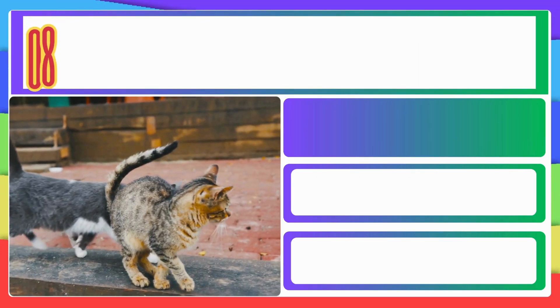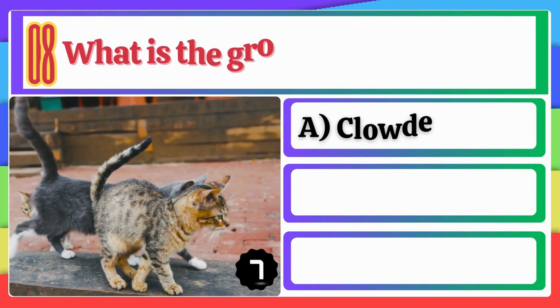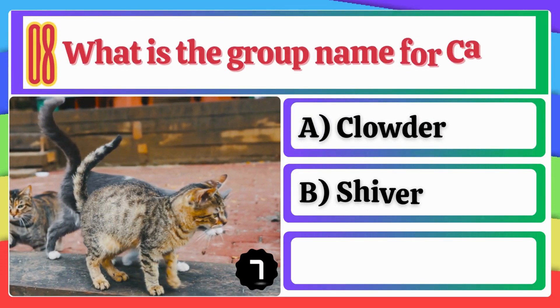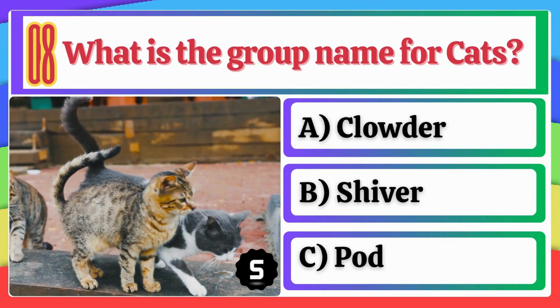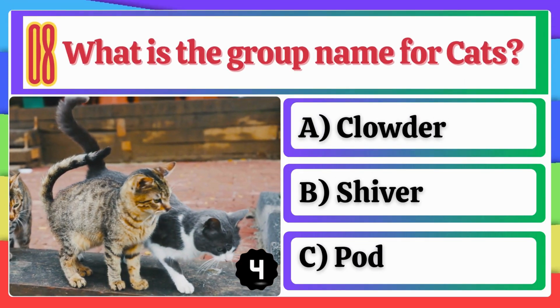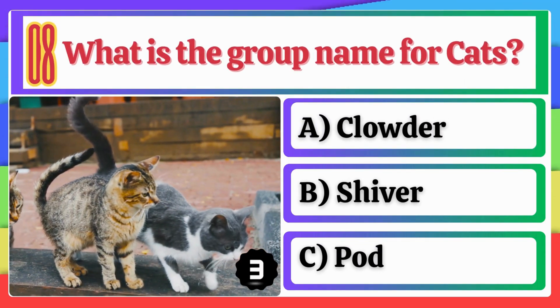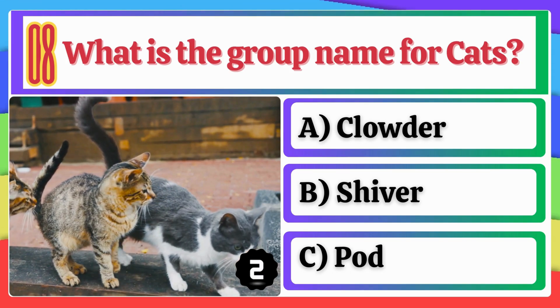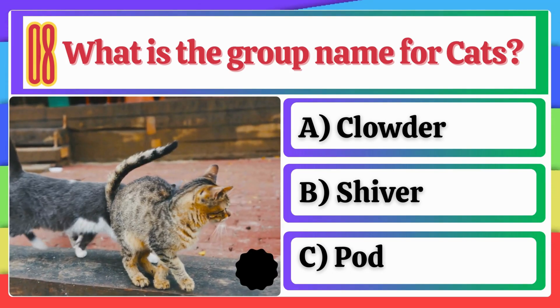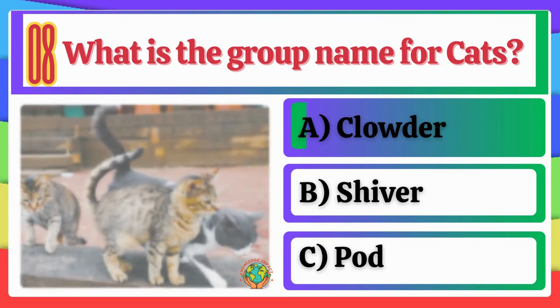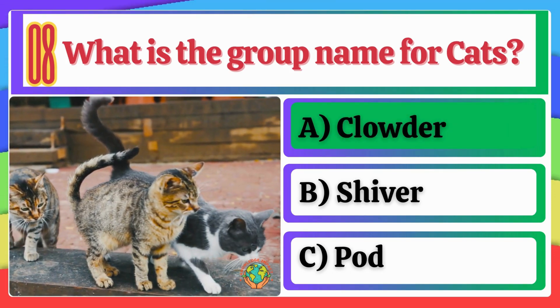What is the group name for Cats? A. Clouder. B. Shiver. C. Pod. Option A, Clouder, is correct.